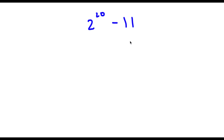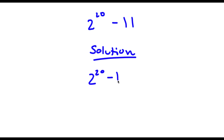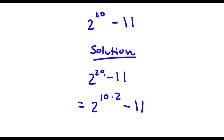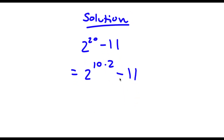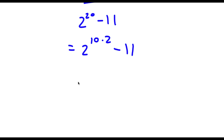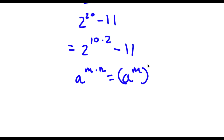Alright, so I have 2 to the power of 20 minus 11. For my solution here, I first start with 2 to the power of 20 minus 11. I'm going to rewrite this as 2 to the power of 10 times 2 minus 11, because 20 is equal to 10 times 2. Now, if I have something in the form a to the power of m times n, this is equal to a to the power of m to the power of n.